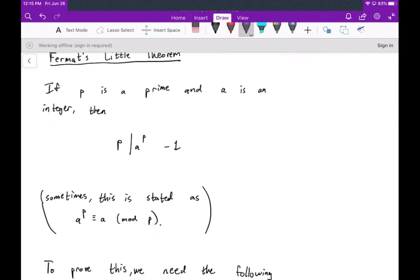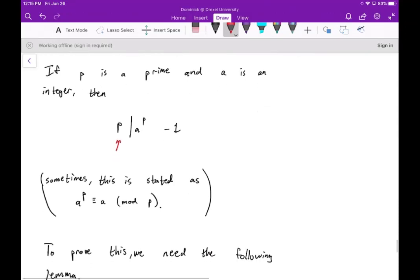Okay, so if P is a prime and A is an integer, then P divides A to that prime minus one. And sometimes this is stated as A to the P is congruent to A mod P. So that's another way that that can be stated.